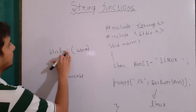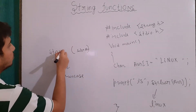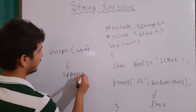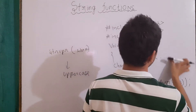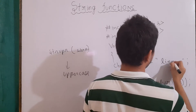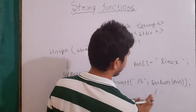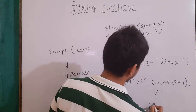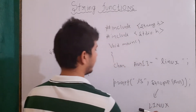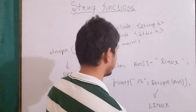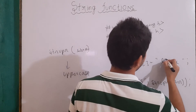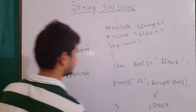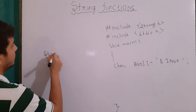Opposite to strlwr there is strupr, which gives me the uppercase of the character array. If the input array was in small case "linux" and I write strupr, our output will be in capital letters: "LINUX". If there is already a character in uppercase there will be no difference — it will give me the entire string in uppercase.